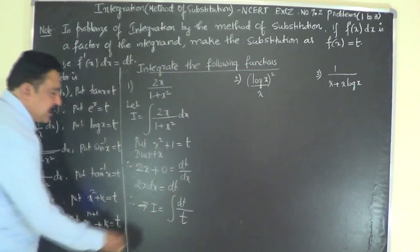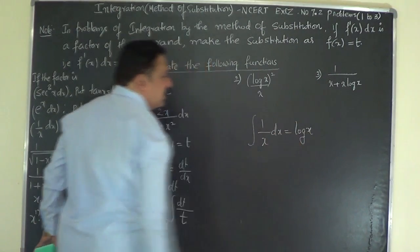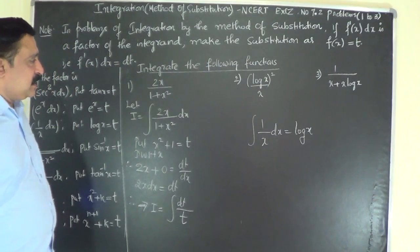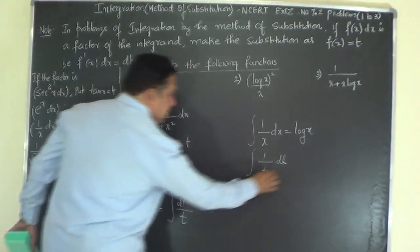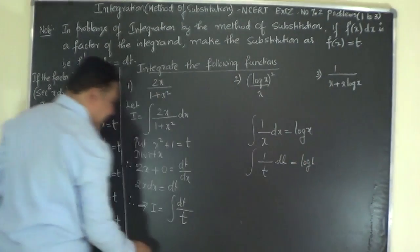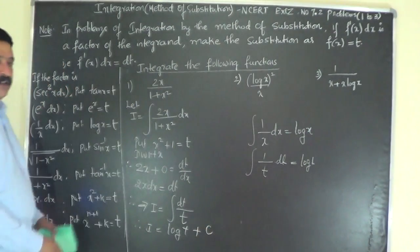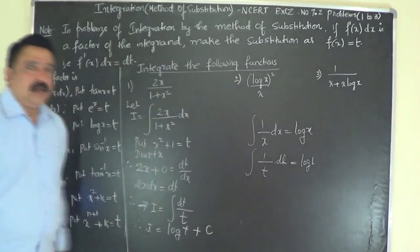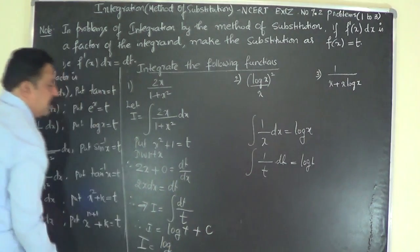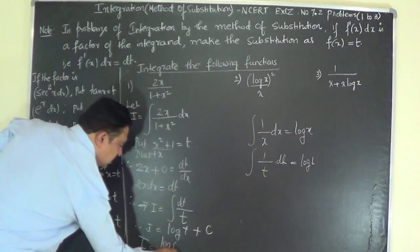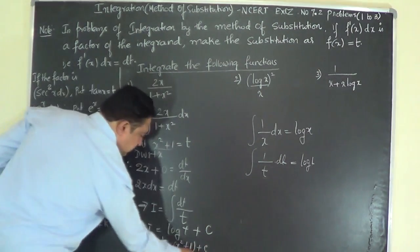We know that ∫ (1/x) dx = log x. In the same way, ∫ (1/t) dt = log t. Therefore I = log t + C (constant of integration). The last step: substitute back t = x² + 1. So I = log(x² + 1) + C (to the base e). This is the answer to the first integration problem.